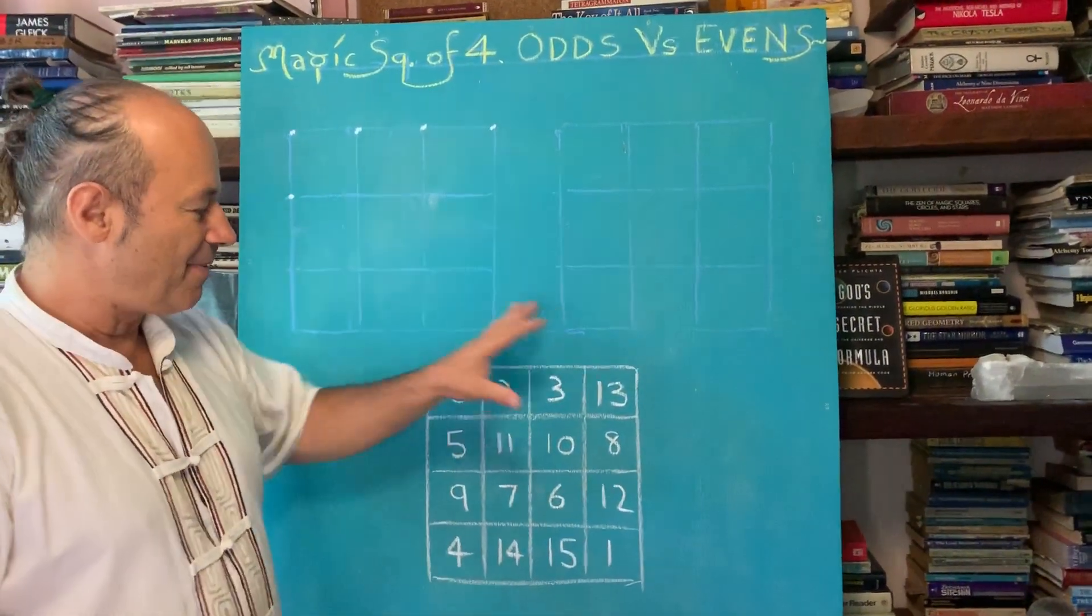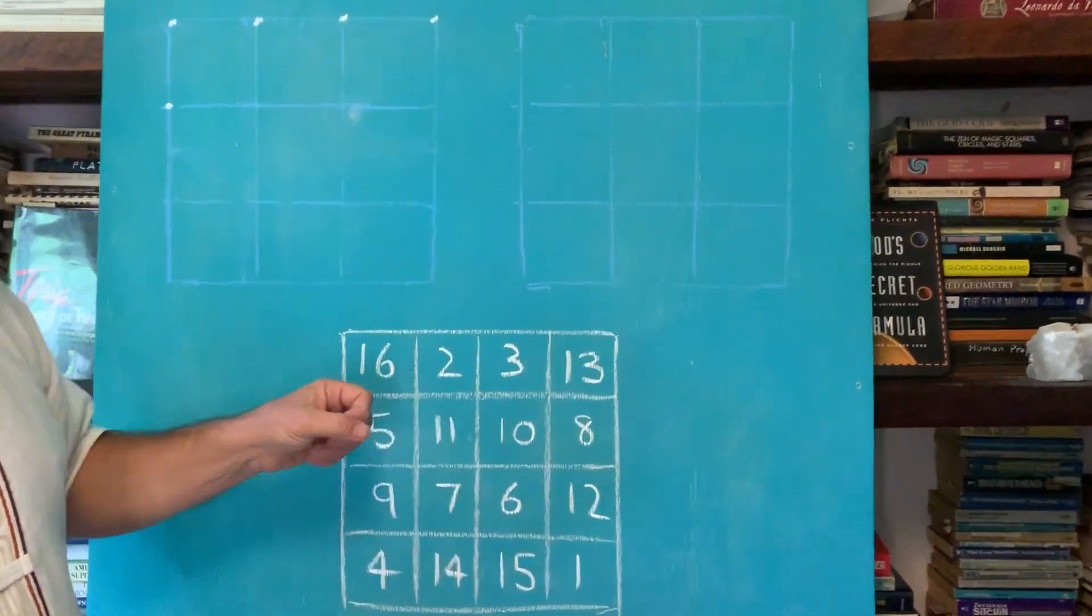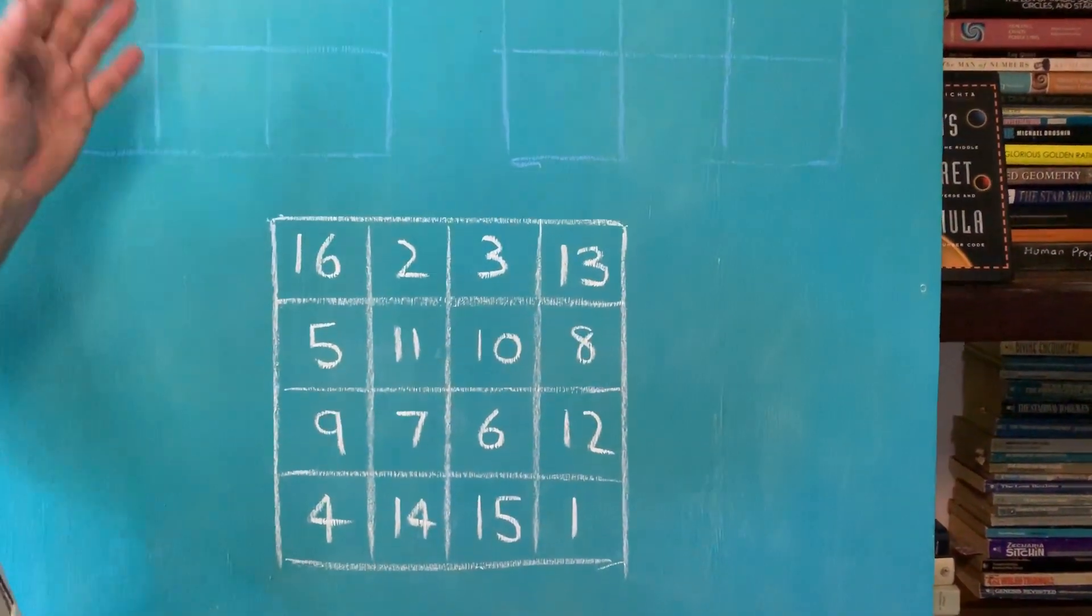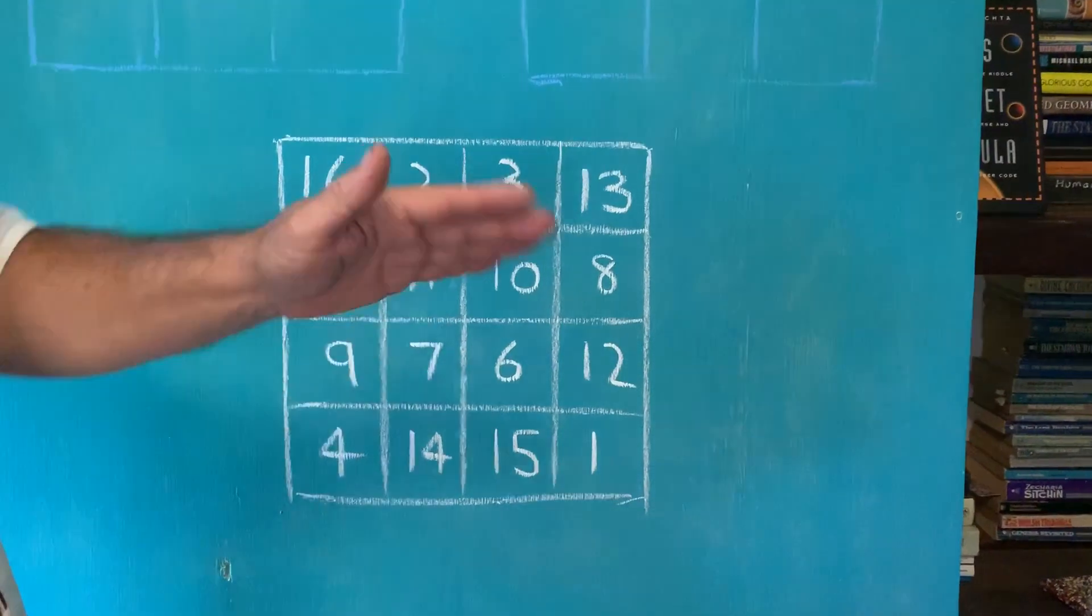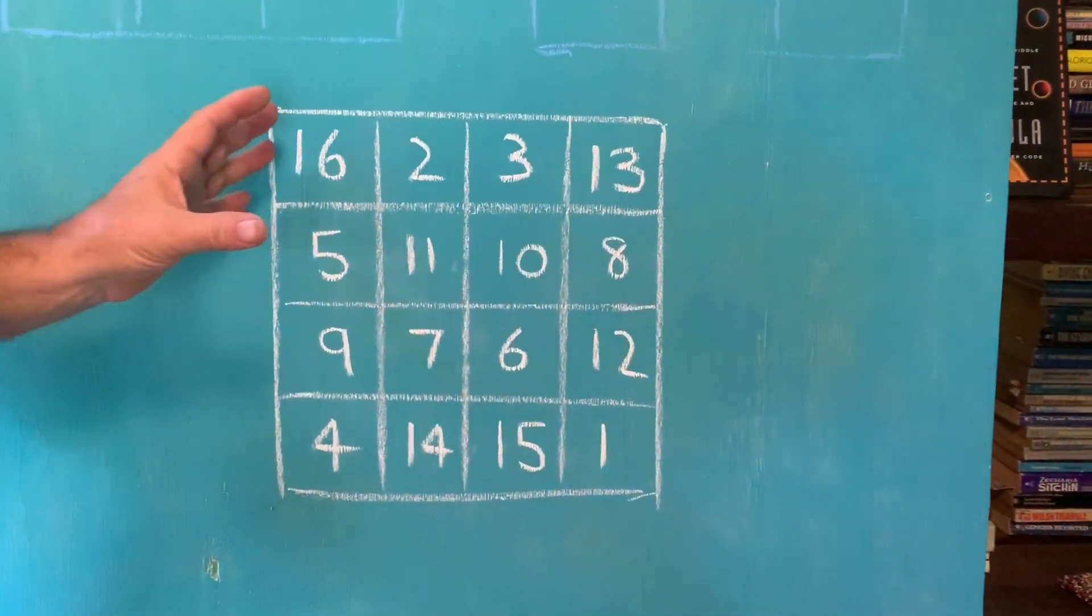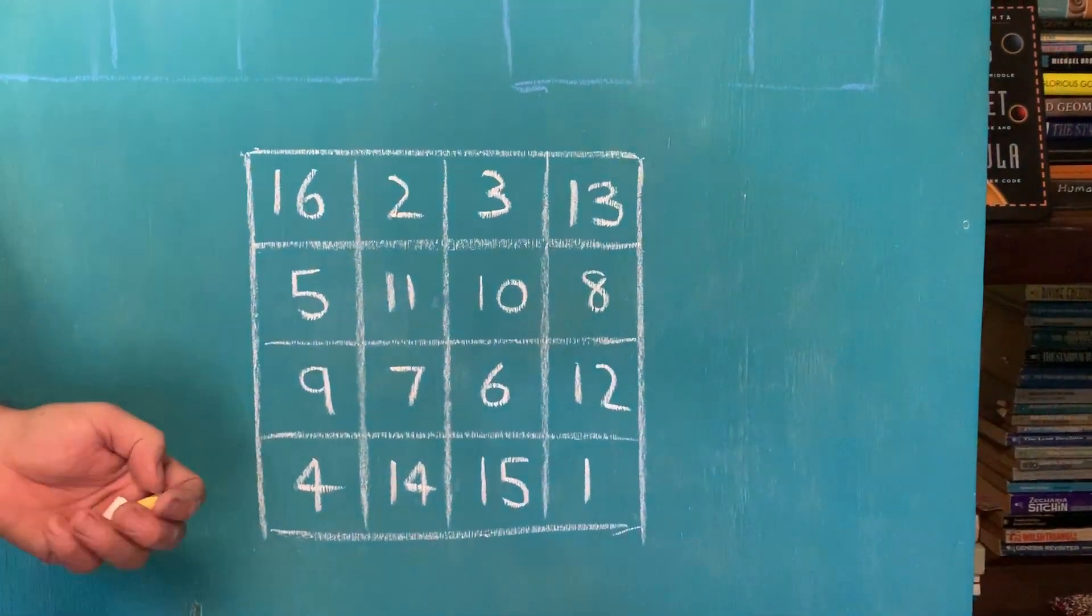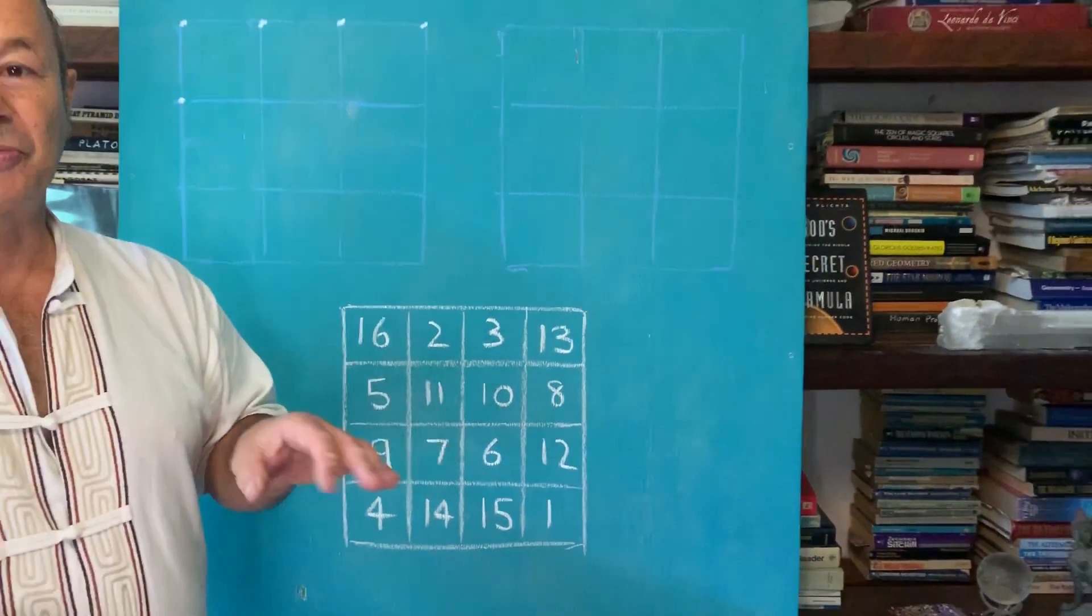We just explored how the magic square of 4x4, sometimes known as the magic square of Jupiter, had harmonic numbers all adding up to 34 and how it was created. But what I want to show now is that inside this matrix of 16 numbers is what we call hidden internal symmetry.